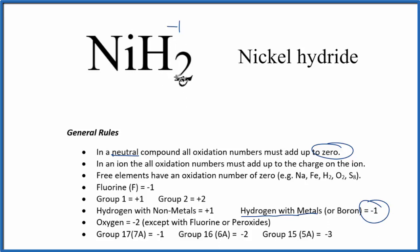So we can set up a little equation. We could probably just do it by inspection, but let's set an equation up. Everything needs to add up to zero. So we have nickel, I'm going to call that x, plus two hydrogens, and each one is minus one, and all of that has to equal zero because it's a neutral compound.